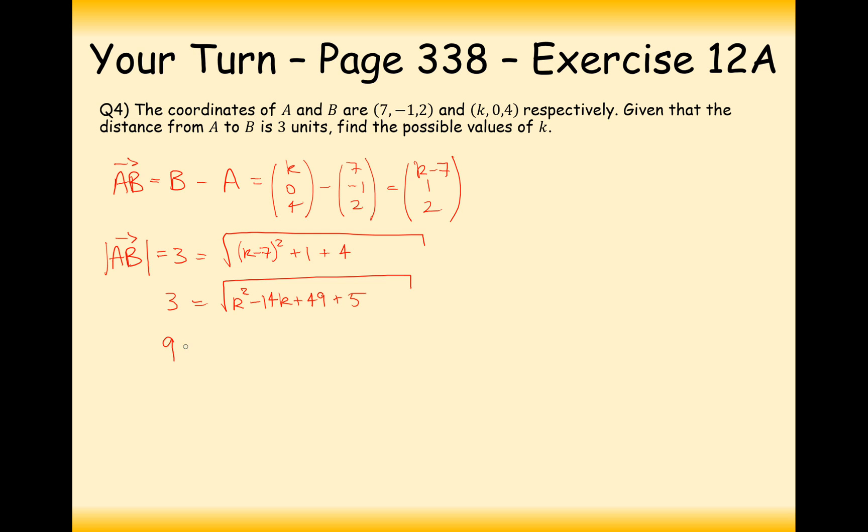Let's get rid of the square root by squaring both sides. So 9 equals K squared minus 14K plus 49 plus 5. Subtract 9 from both sides. This gives us K squared minus 14K plus 40. Now we need to solve a quadratic equation. You can either use your calculator or try some brackets. In this case it's going to be K minus 10 and K minus 4. So we get two answers: K equals 10 and K equals 4.